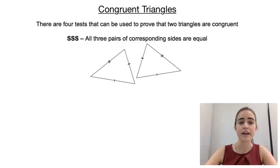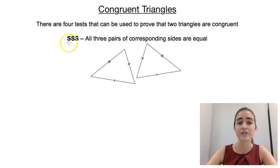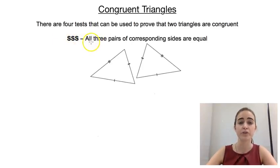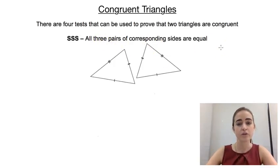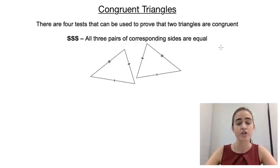One of the four tests is called the SSS test, which stands for side, side, side. That means we need to prove that all three pairs of corresponding sides are equal. When we look at two triangles, we need to match up the corresponding sides and show that they are equal to each other.